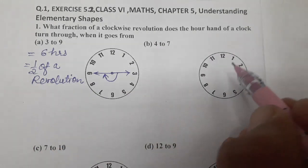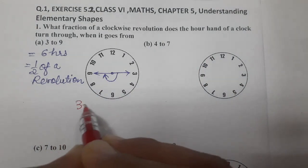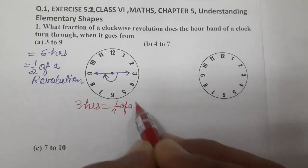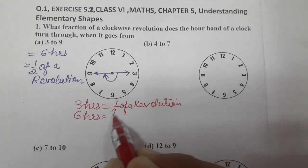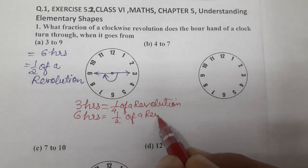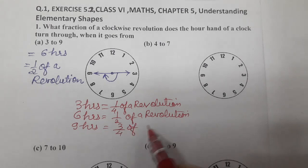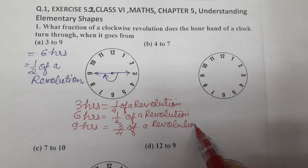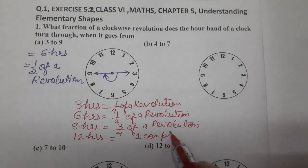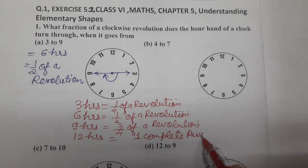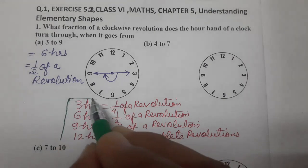Now, see another one. 4 to 7. So, you have to remember the key points. What is the key point? For 3 hours, it is 1 fourth of a revolution. For 6 hours, it is half of a revolution. For 9 hours, it is 3 fourth of a revolution. And lastly, for 12 hours, it is 1 full revolution, 1 complete revolution. So, these are the key points you must know.